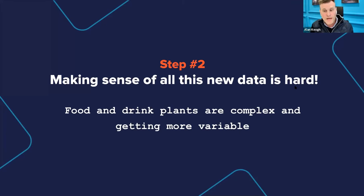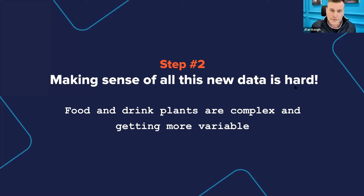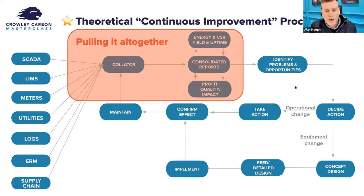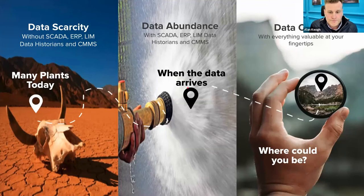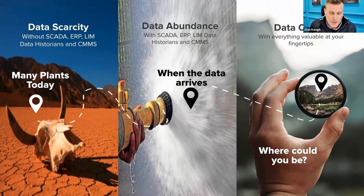Step two is to make sense of this new data. You've got all this OT stuff hooked up — all the old compressors, cooling towers, production information coming in through the cloud — you've got to make sense of it. Food and drink plants are complex and getting more complex: more SKUs, plants up and down all the time, the market dictating how plants run. We're moving hopefully from data scarcity, where there was no data, through data abundance — which is like drinking from a fire hose — to data clarity: seeing exactly what's happening in the plant and how it's performing versus production rate, weather, or product mix.